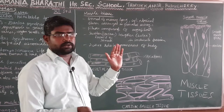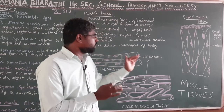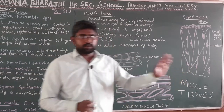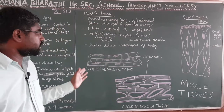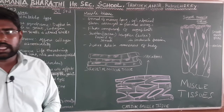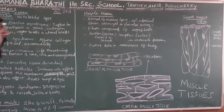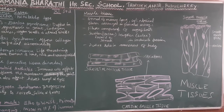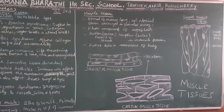In smooth muscles, movement is limited compared to skeletal muscles. Smooth muscles form the wall of internal organs such as blood vessels, the stomach, the intestine, and other organ walls. They are made up of smooth muscle tissue.